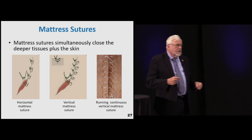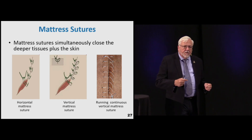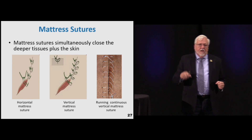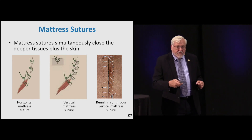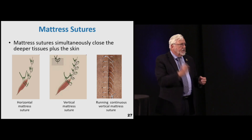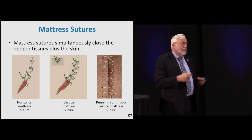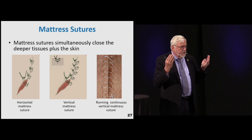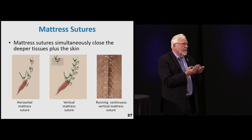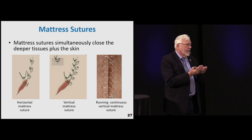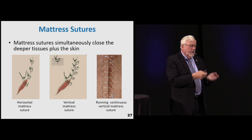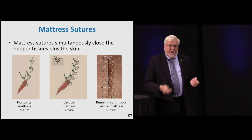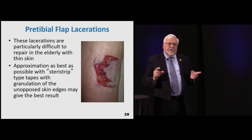Mattress sutures are really important if you need to close deeper tissues within the skin - you can use horizontal mattress, vertical mattress, or running continuous. This works really well when you have to go deep. It's important to make sure the tissue underneath the skin is also brought together, otherwise you end up with hematomas or areas for infection.